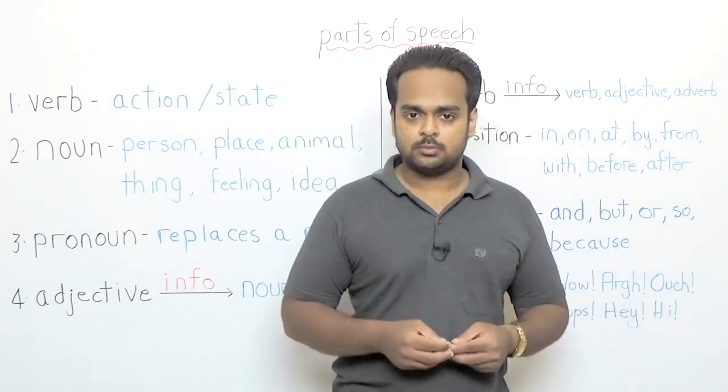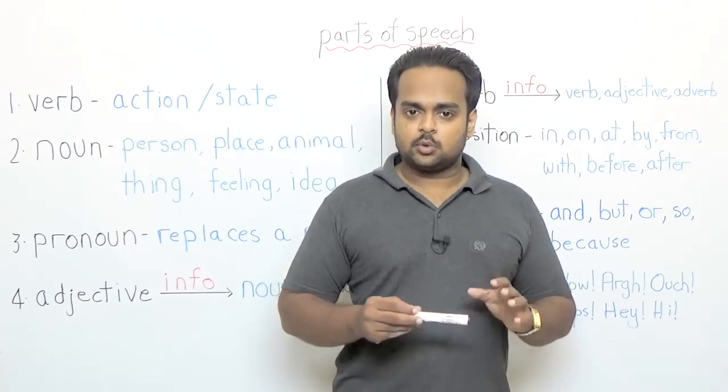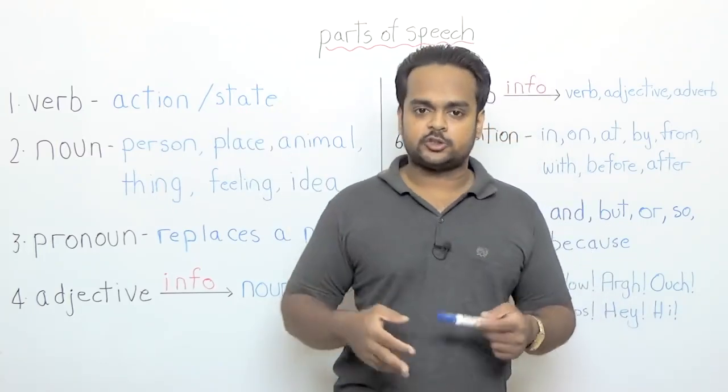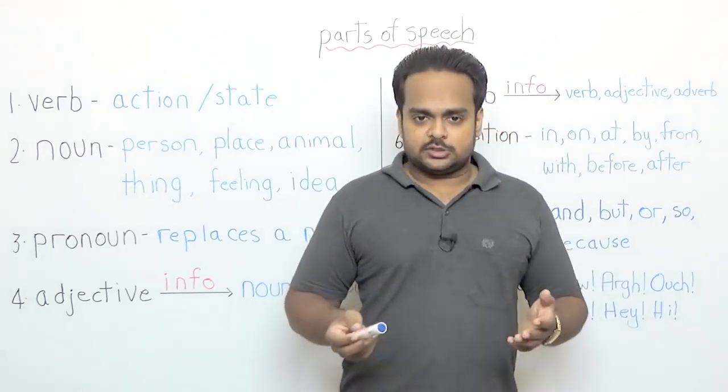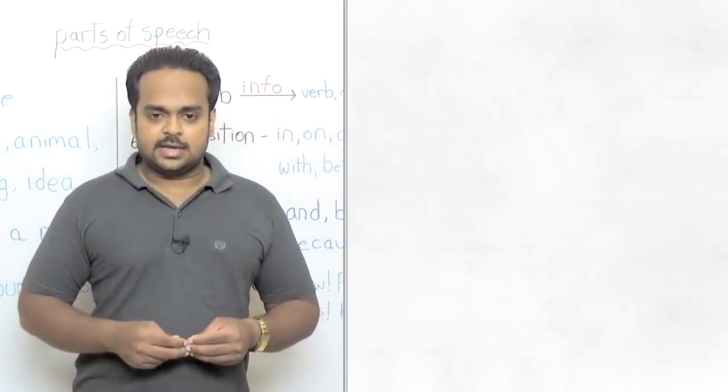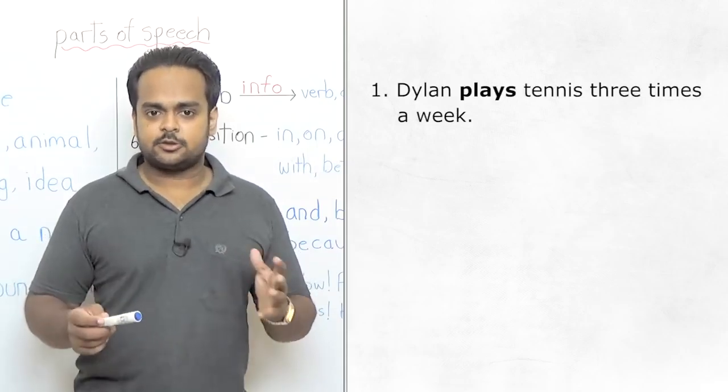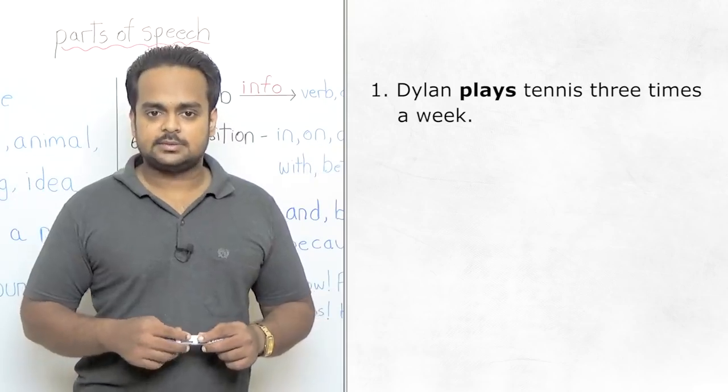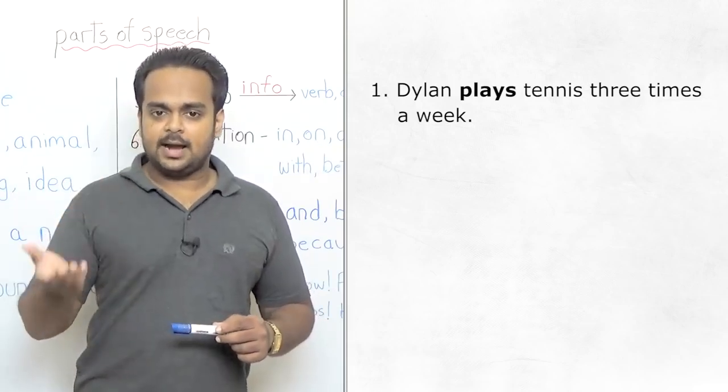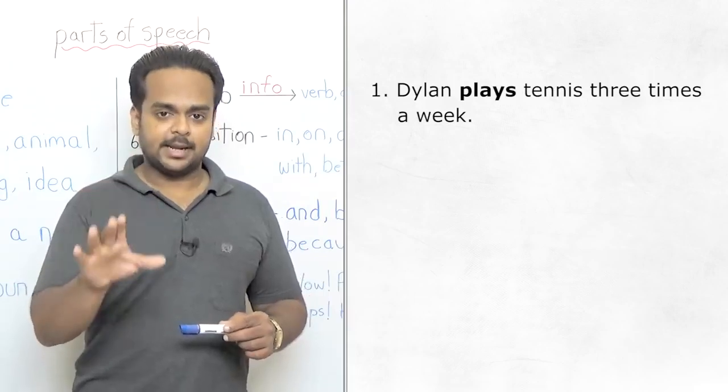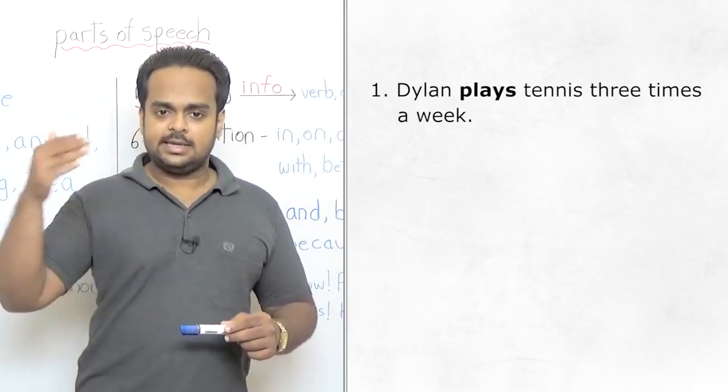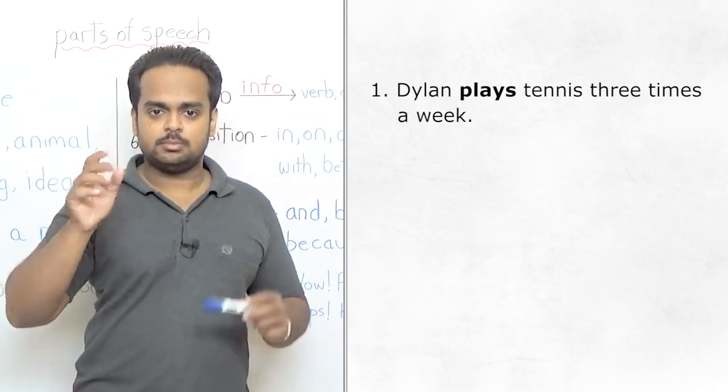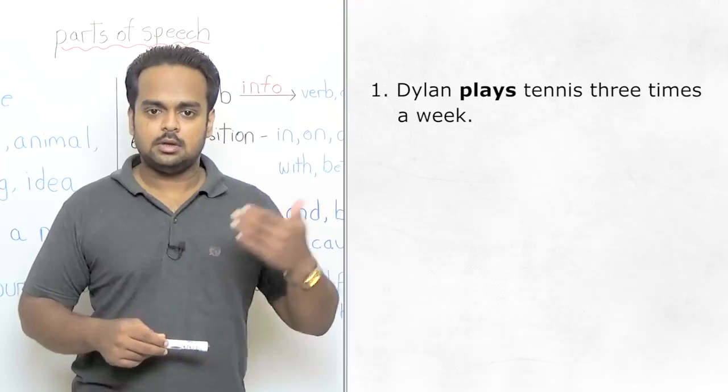But what does a verb do? Well, a verb is a word that shows an action or a state. State means a situation. For example, in the sentence Dylan plays tennis three times a week, the verb is play because that's the action. We're saying plays because for he, she, and it we add the s to the verb in the present tense.